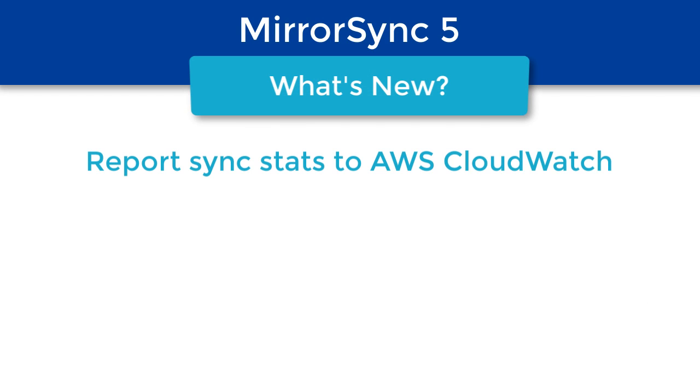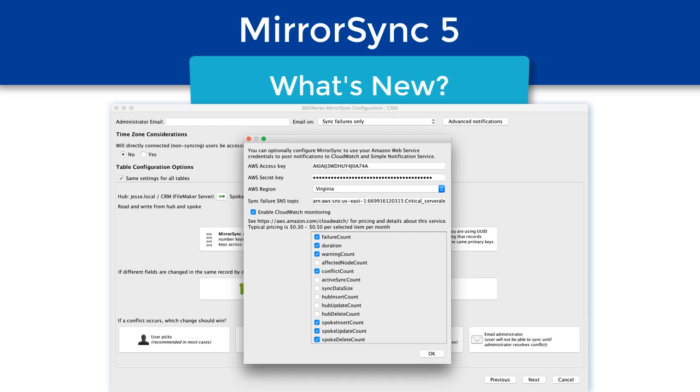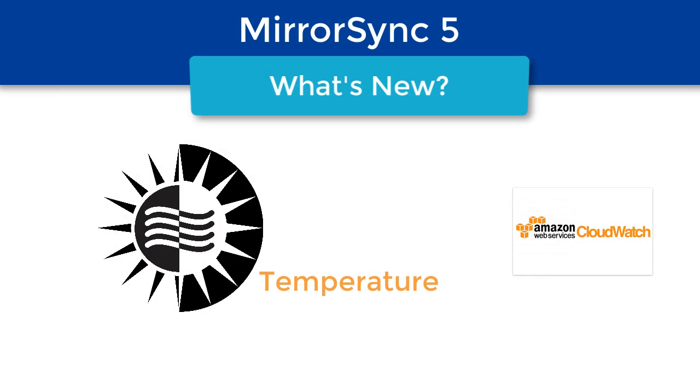So that's two new features of MirrorSync 5. What else? The next thing is reporting sync stats to AWS CloudWatch. CloudWatch is a monitoring tool provided by Amazon Web Services. Any quantifiable data can be reported to CloudWatch — you could use it to report temperature, number of records, time, warnings, things like that.